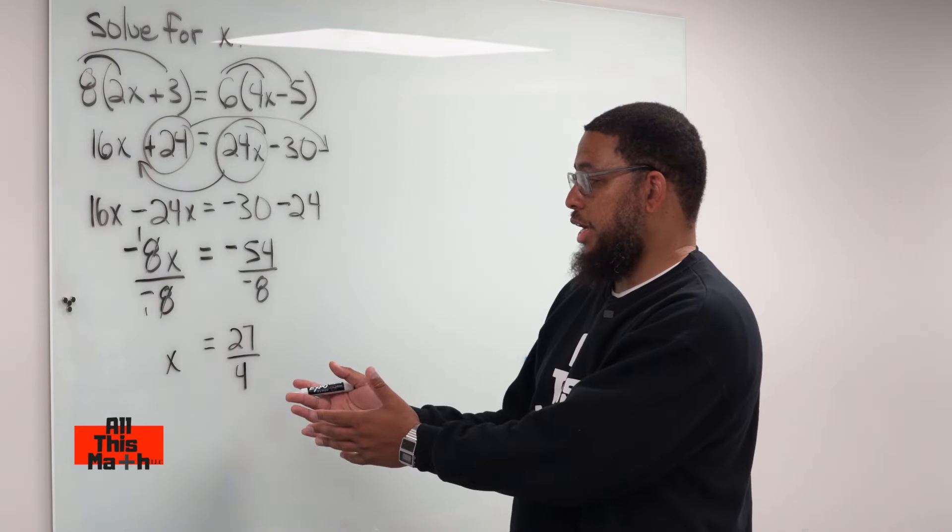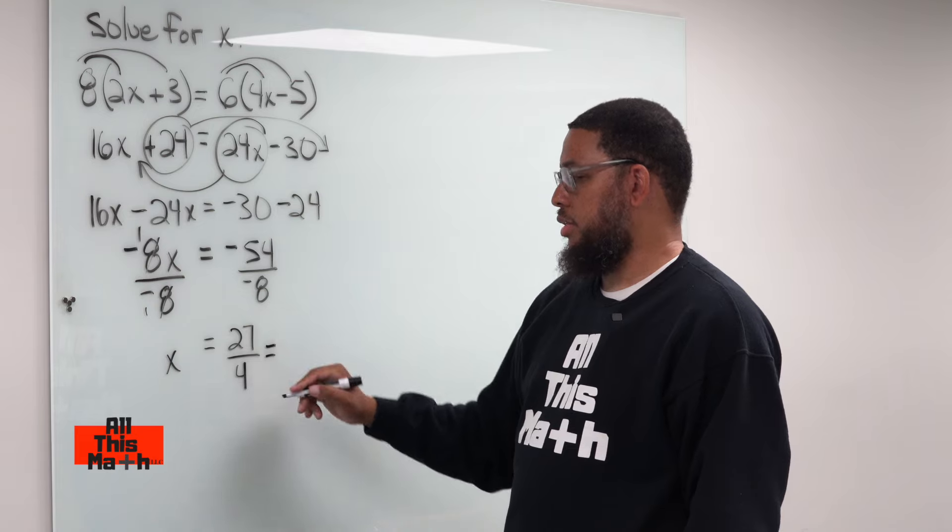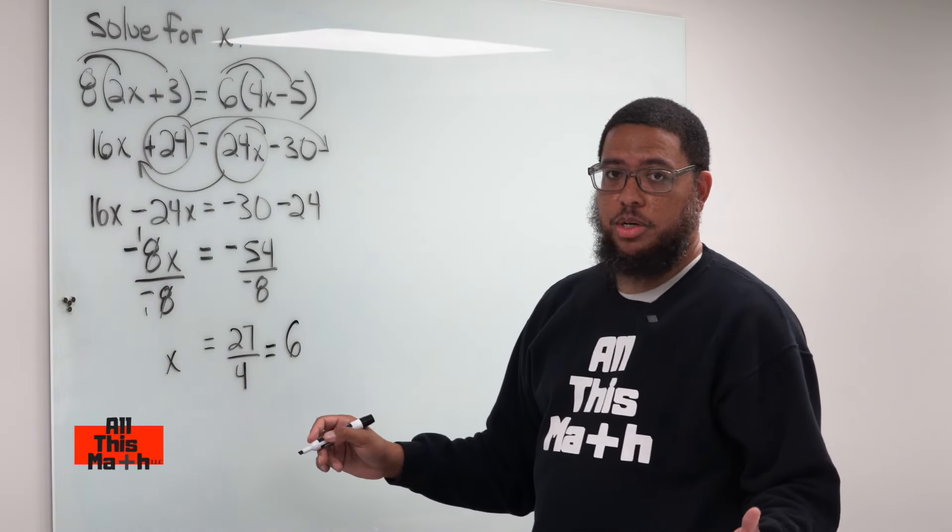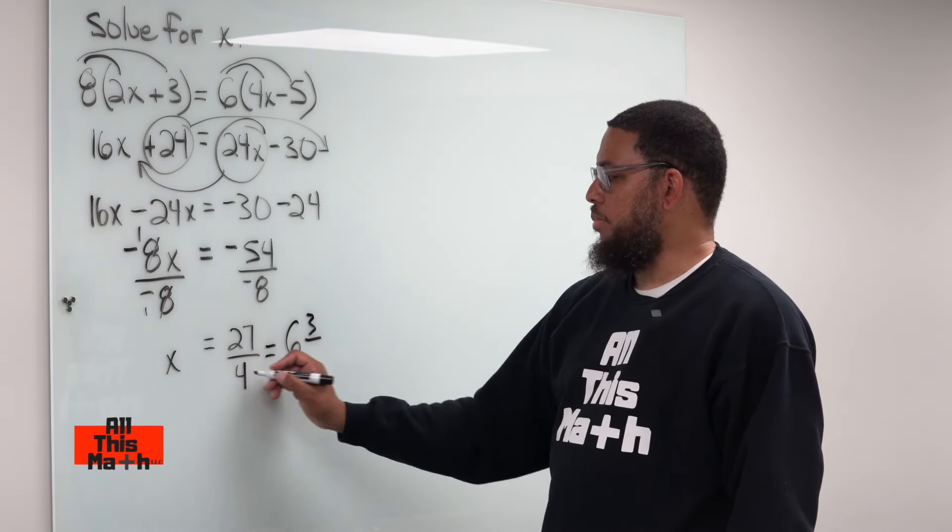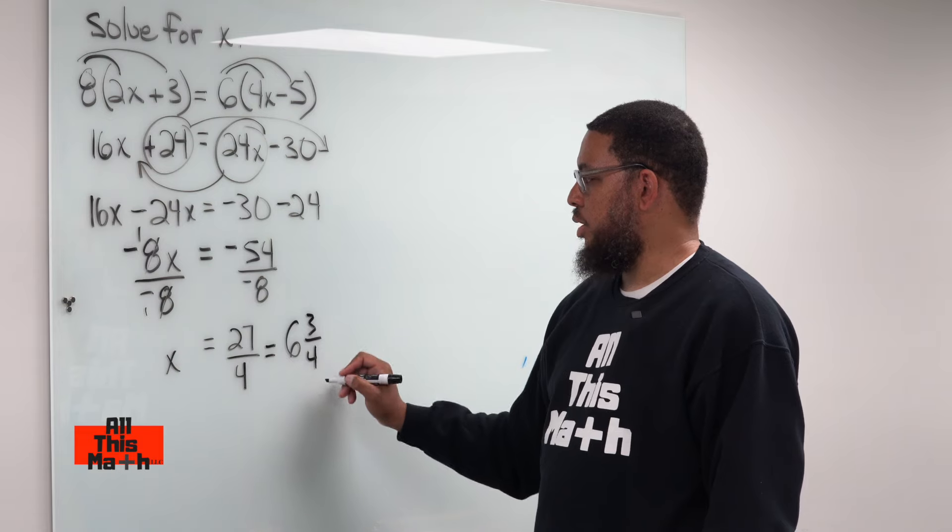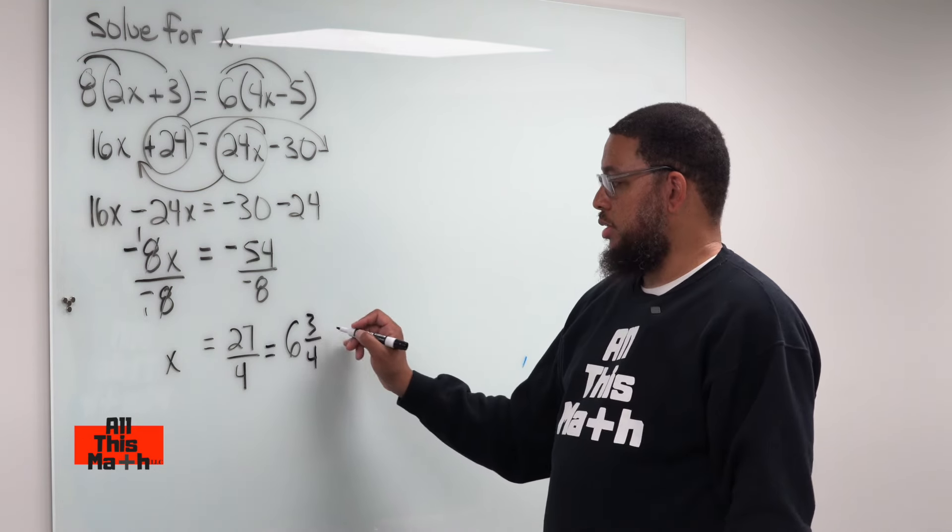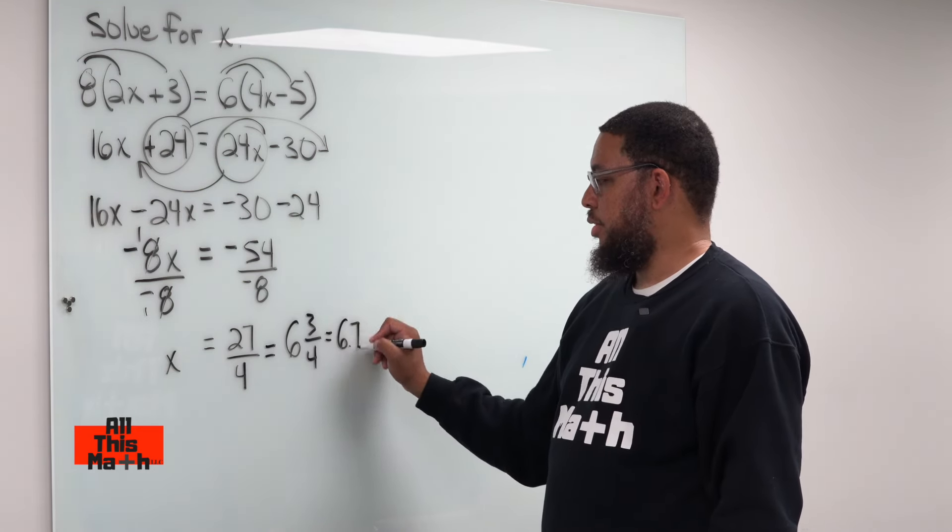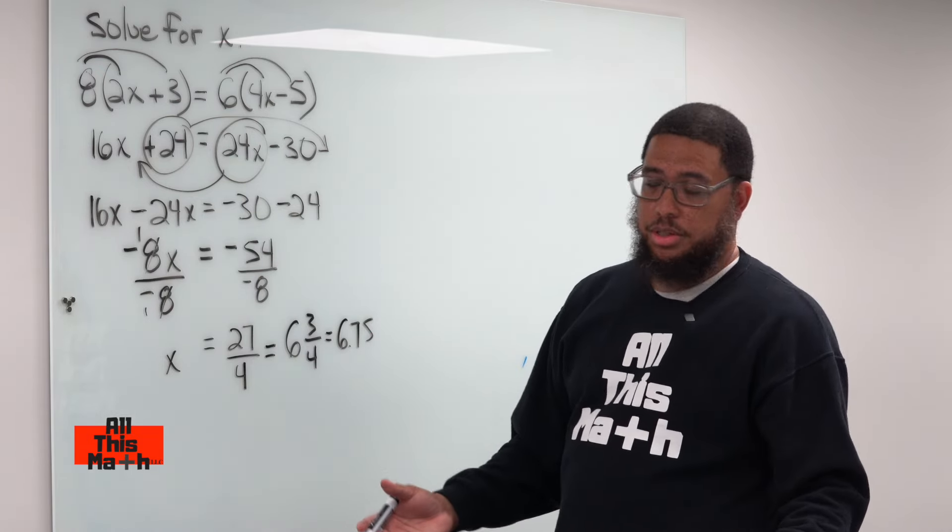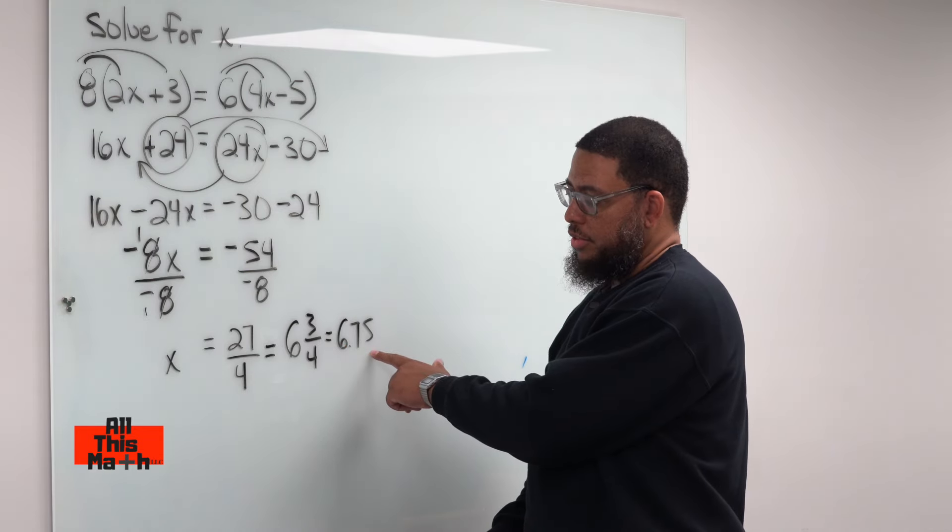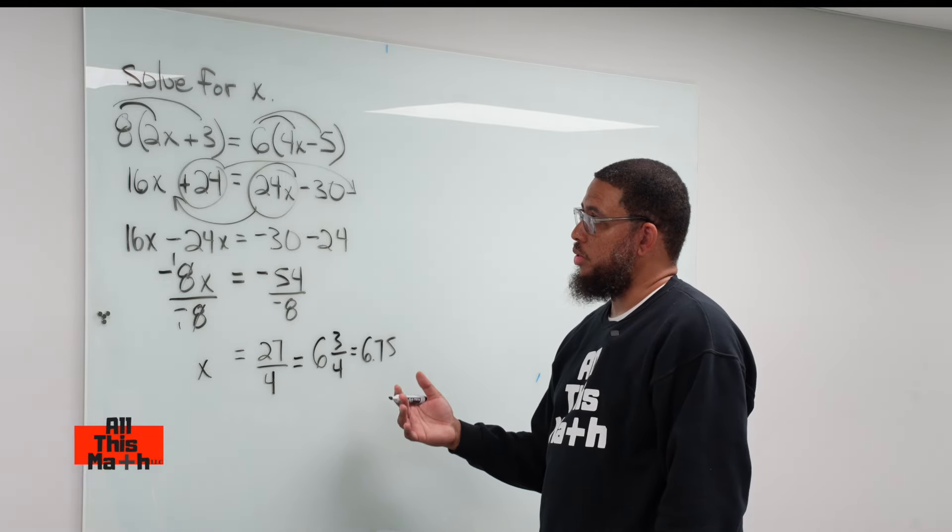So 27 fourths, we could leave the answer like this, or we could convert into a mixed number. How many groups of 4 fit into 27? 6, since 6 times 4 is 24. And then what's the difference between 27 and 24? 3. So that's going to be our numerator. We keep the same denominator, which is 4. And so we also could represent this 27 fourths as 6 and 3 fourths. We also could represent this as 6.75, since 3 fourths and 0.75 are the same thing, just like 3 fourths could be represented as 3 quarters. 3 quarters is the same thing as 75 cents. So x is equal to 27 fourths or 6 and 3 fourths or 6.75.